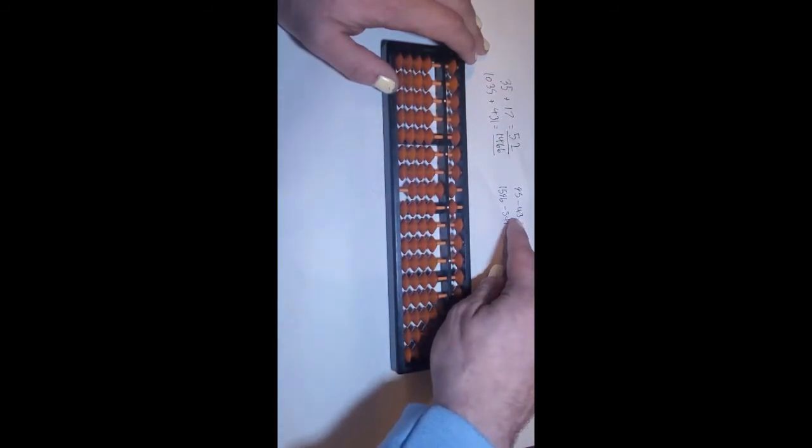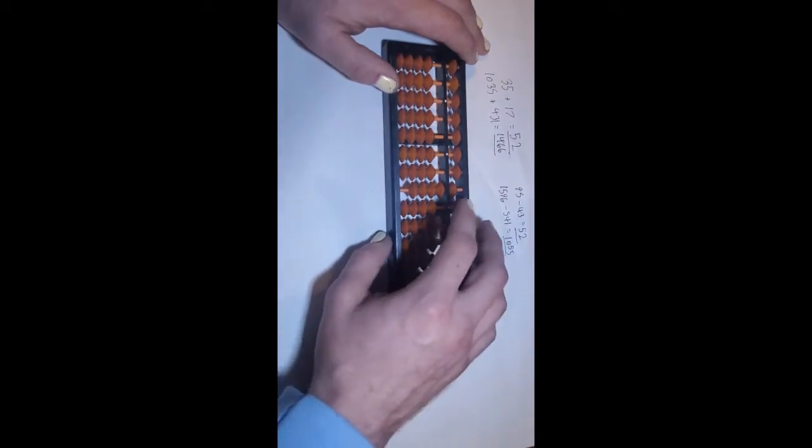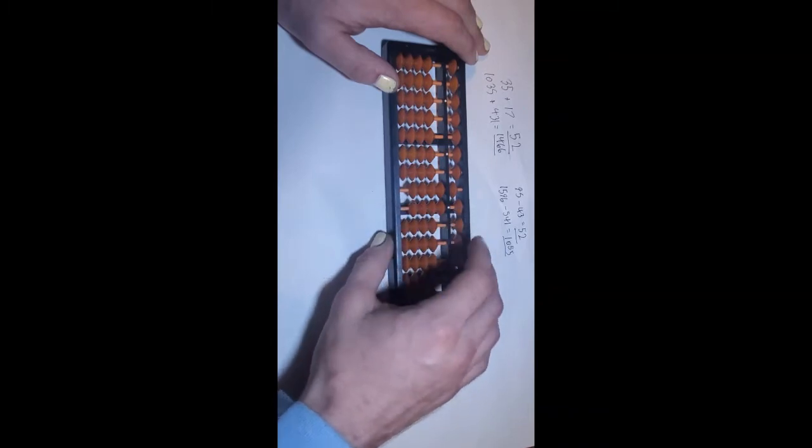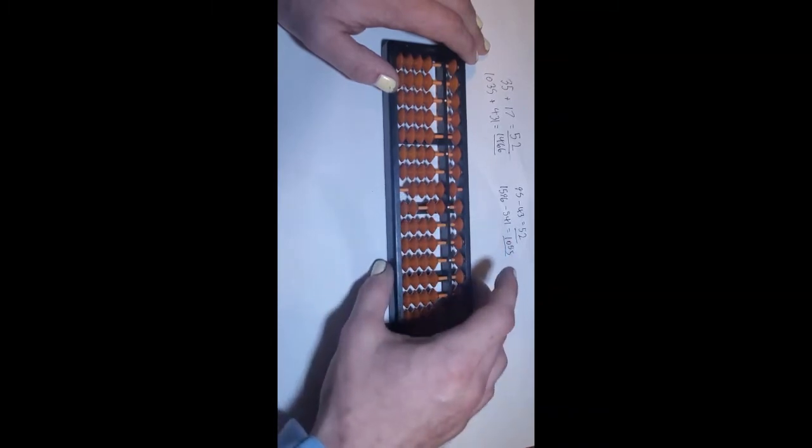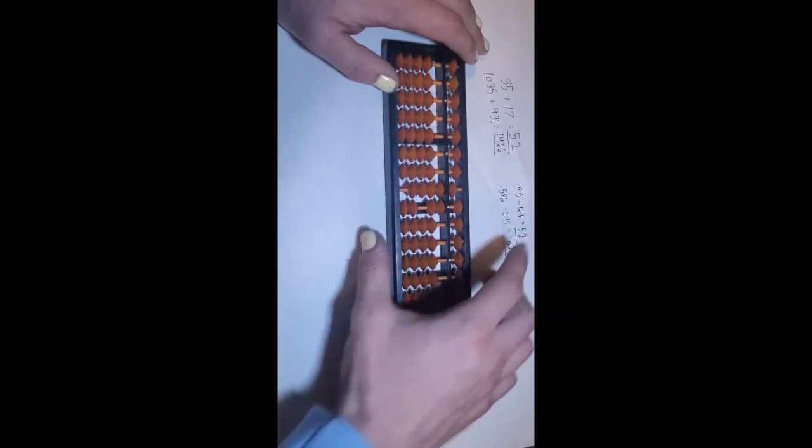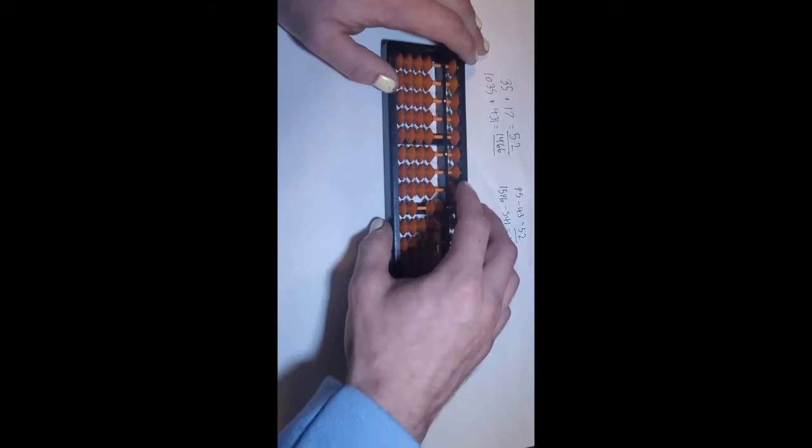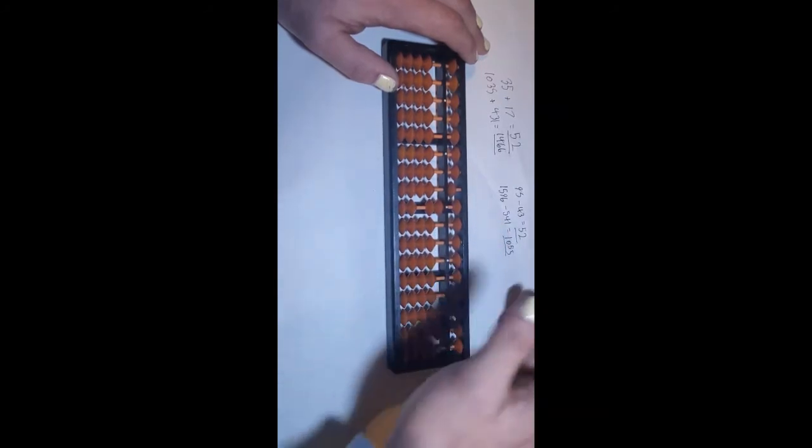And from that, we want to take 43. So to do this, we take 1. We have 4 in the ones place, 2, 3. Okay, now we need to take 4 from the tens place, which is done like that. So now we have 52 remaining, and that's our answer.